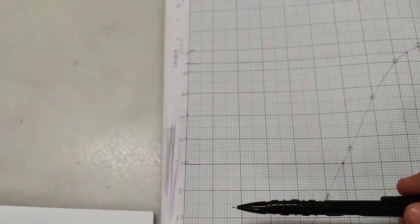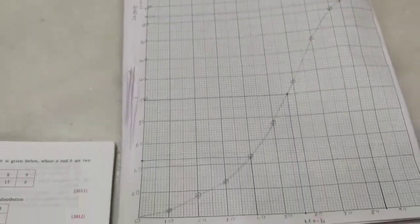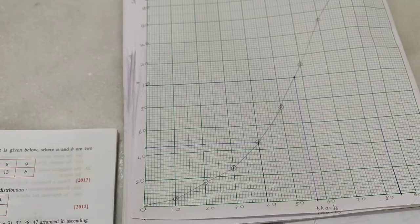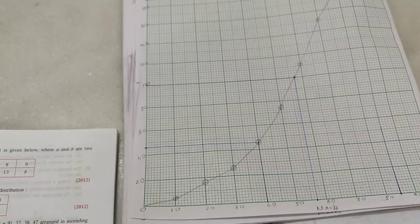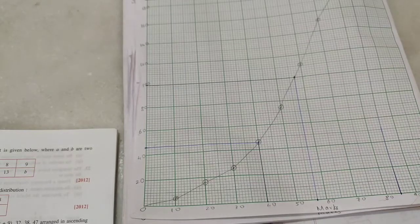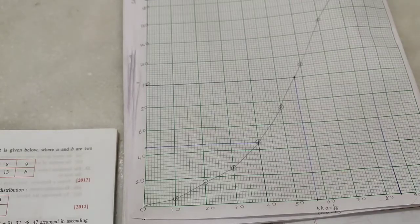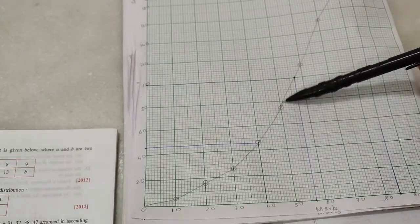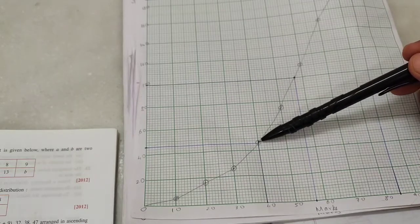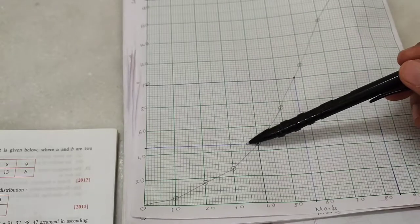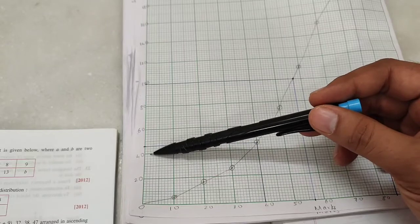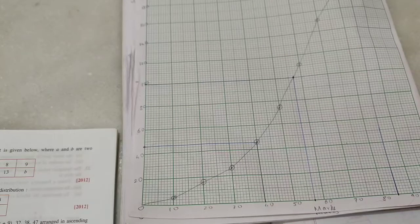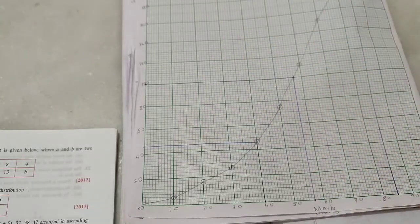Now roman number two is number of students who failed if the minimum marks required to pass is 40. Okay, 40. So we'll have to start from the x-axis now and we'll get the answer from the y-axis. So draw a line from 40. Wherever it cuts the graph, interestingly it is similar to the point plotted. That's fine, it may not have been, by the way. Draw a line. So what is the value of this? Be careful about the scale. I guess it's 40, 42, 44, 46. So 46 students failed who got less than 40 marks, and the rest of them passed.